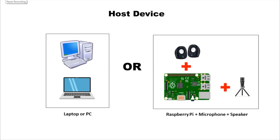Now let's see where we can host the voice assistant module. We can use a laptop or PC where a microphone and speakers are inbuilt, but the main disadvantage is that whenever you shut down your laptop or PC, the voice assistant will stop working. Alternatively, you can use a Raspberry Pi with a microphone and speaker — the main advantage being that your voice assistant becomes a portable device you can always keep powered on.